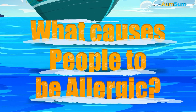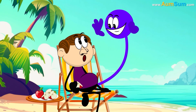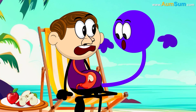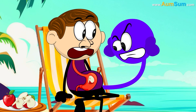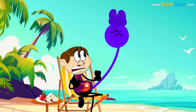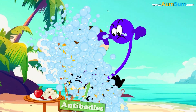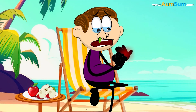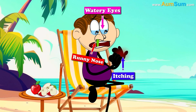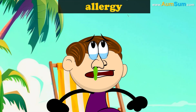What causes people to be allergic? An allergy occurs when our immune system mistakenly identifies a normal innocuous substance as a harmful intruder. Hence, it produces antibodies to kill the intruder and in the process gives rise to itching, runny nose, watery eyes, etc., thus causing an allergy.